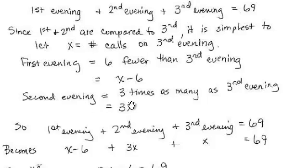The second evening is three times as many as the third evening. Well, if the third evening is X, then three times X is 3X. So the first evening plus the second evening plus the third evening equals 69.